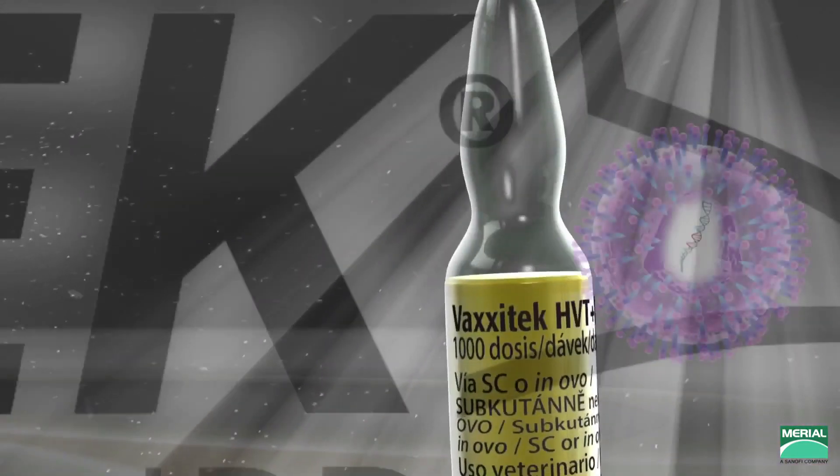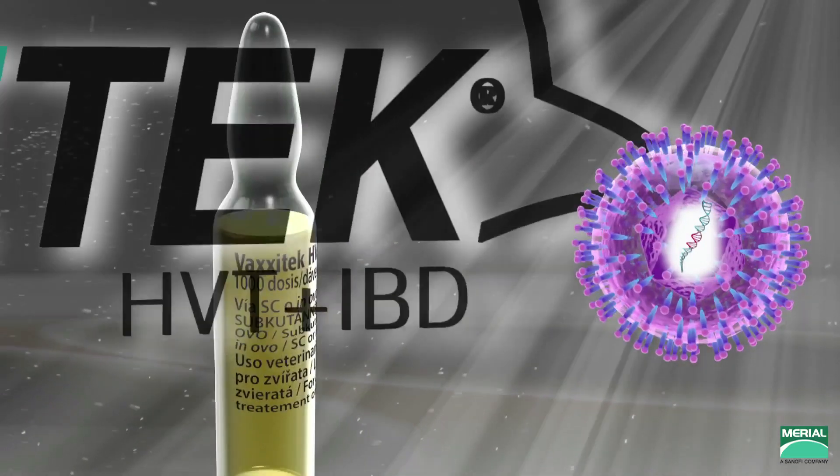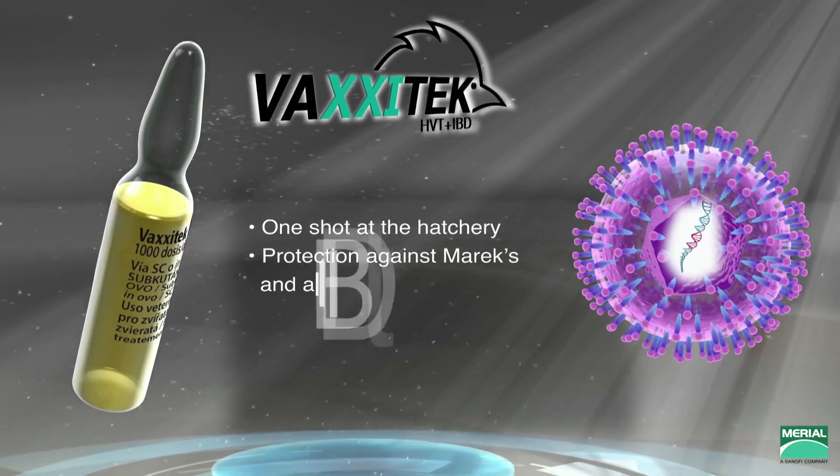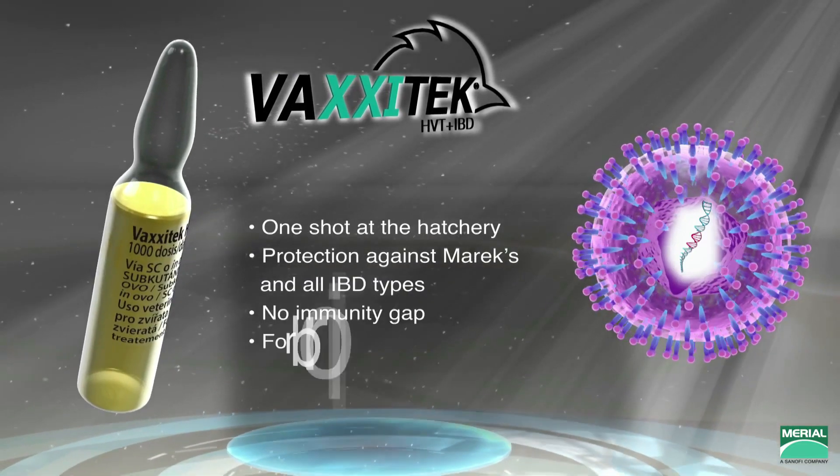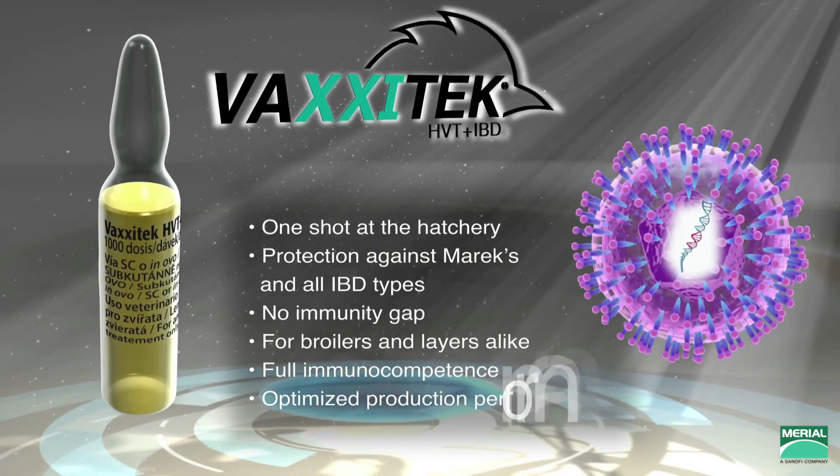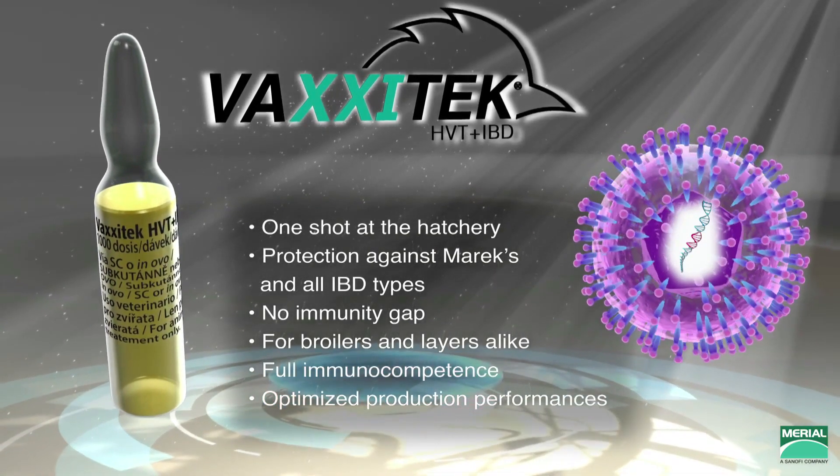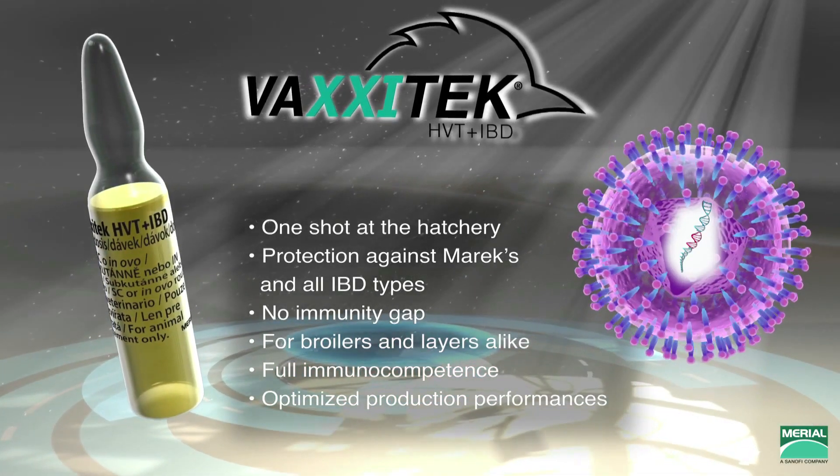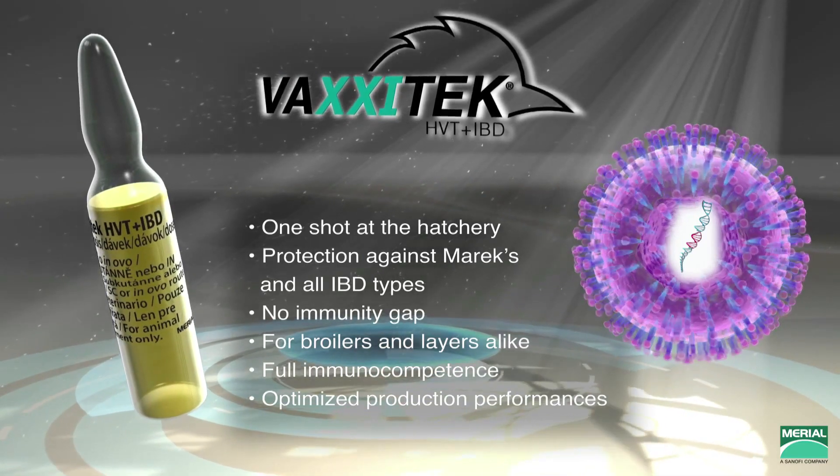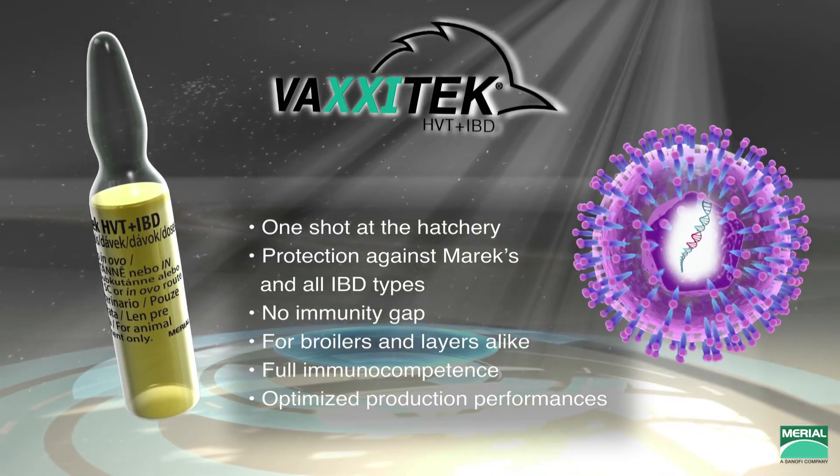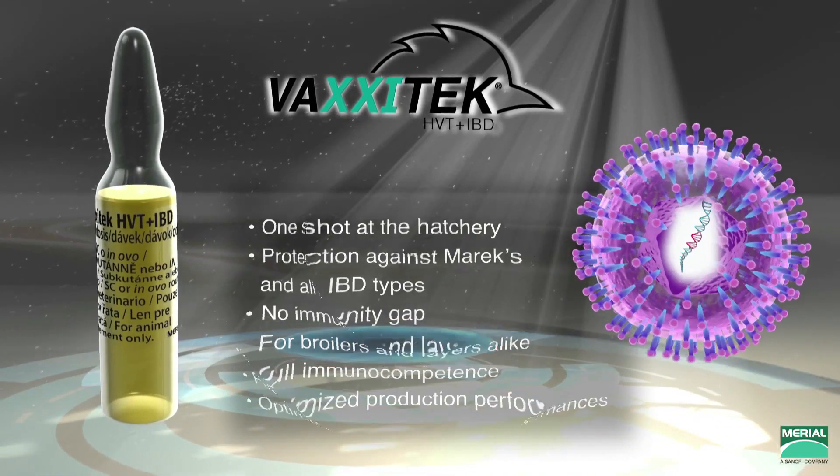In conclusion, Vaxxitek vector technology not only allows hatchery administration against two major immunosuppressive diseases, it also solves the efficacy problem by preventing an immunity gap and comprehensively protecting the integrity of the bursa against all IBDV types in broilers and pullets alike. This means that Vaxxitek vaccinated birds have their entire B cell repertoire to respond positively to other vaccines and the many pathogenic agents present in the poultry house, optimizing production performances.